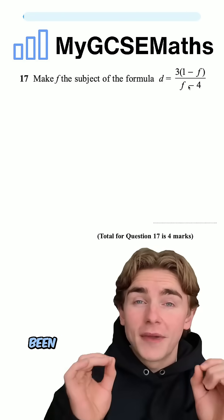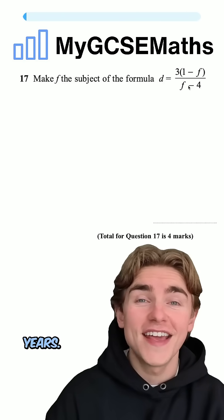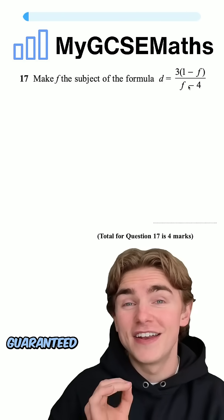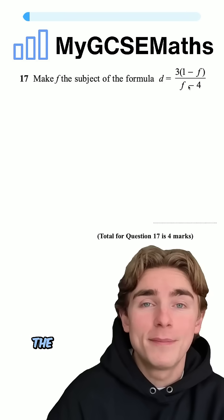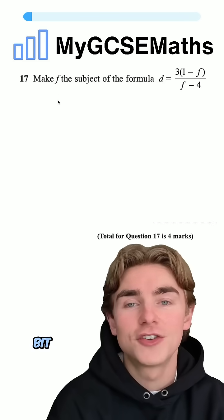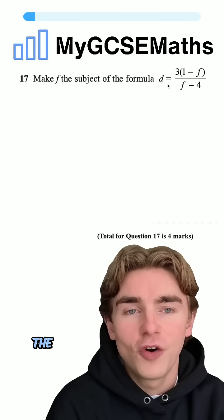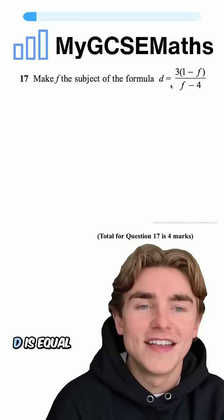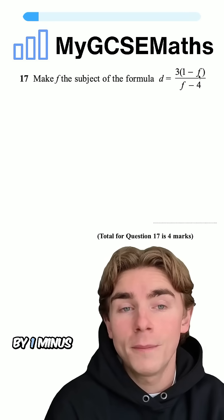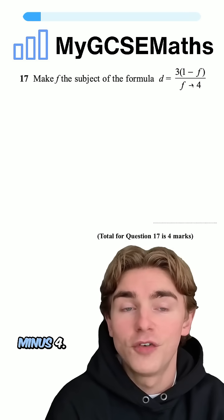Questions like this have been coming up more and more in recent years. Now I can say it's pretty much guaranteed in one of the papers. Let's have a look — it is a little bit tricky. The question says: make f the subject of the formula, d is equal to three times by one minus f, over f minus four.